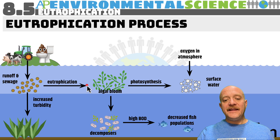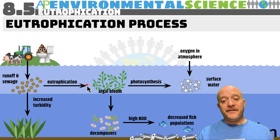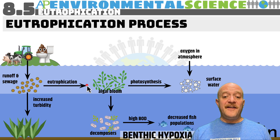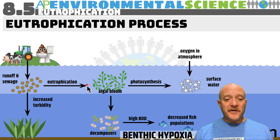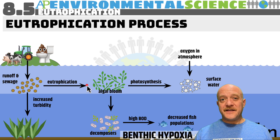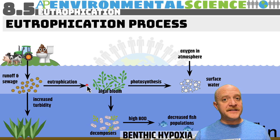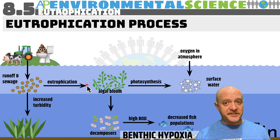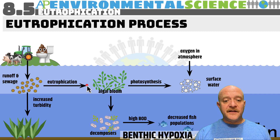This decrease in oxygen leads to a decrease in fish populations and fish death, caused by benthic hypoxia — the fish are asphyxiated. Importantly, decomposition is cellular respiration: the bacteria and other decomposers perform cellular respiration, which uses up oxygen and consumes the glucose found in the tissues of these dead organisms.